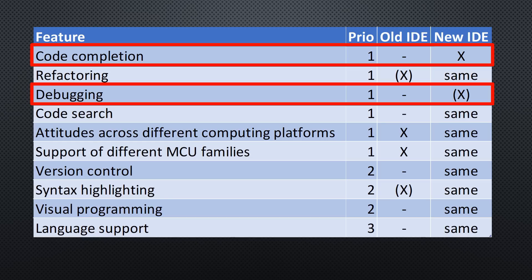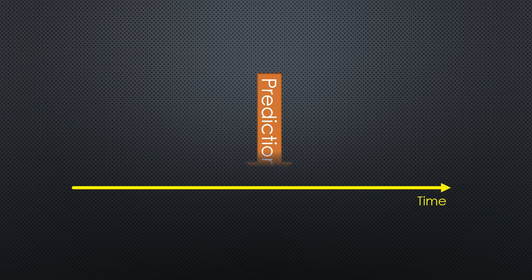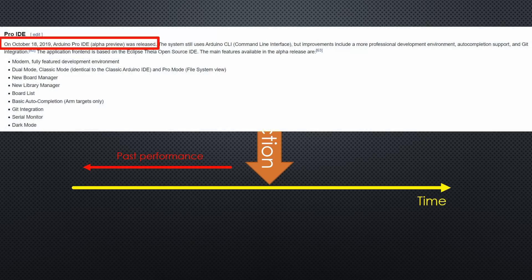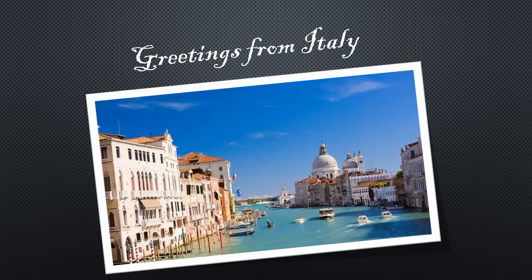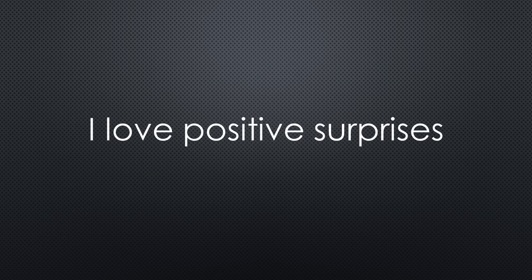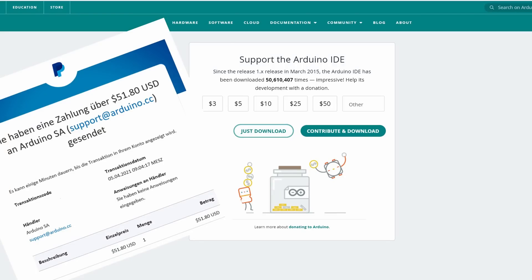In my professional life I have to assess projects. When asked for predictions of future performance, I look at a team's past performance. This IDE project started in October 2019 as the PRO IDE and is now 1.5 years old. So the chance we will get a stable and usable version with the promised features in the next half year is not very high and would be a pleasant surprise — Italian holidays in August included. But I love to be wrong in this respect. Still, I like the idea that Arduino invests time and money into this new IDE, and I donated my $50, hoping some of you will also support them.